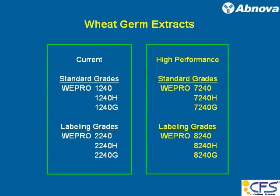Now, I'll talk about what we produce. We have been producing wheat germ extract called WiPro 1240. The 240 signifies the standardized optic concentration, so OD 240. We have H and G grades — the H grade is for yeast tag protein and the G grade is for GST tag protein.